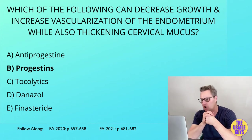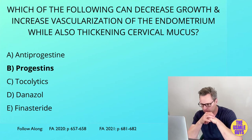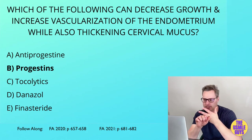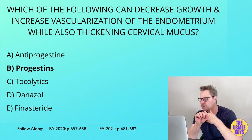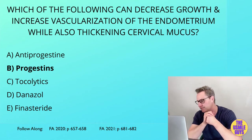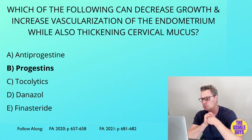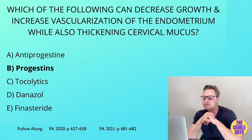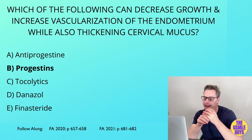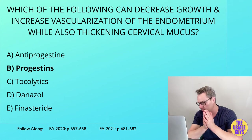Now, tocolytics — what do they do? They relax the uterus to decrease contraction frequency. These include terbutaline, which exerts its effects via beta-2 agonist activity; nifedipine, which is a calcium channel blocker; and indomethacin, which is an NSAID.